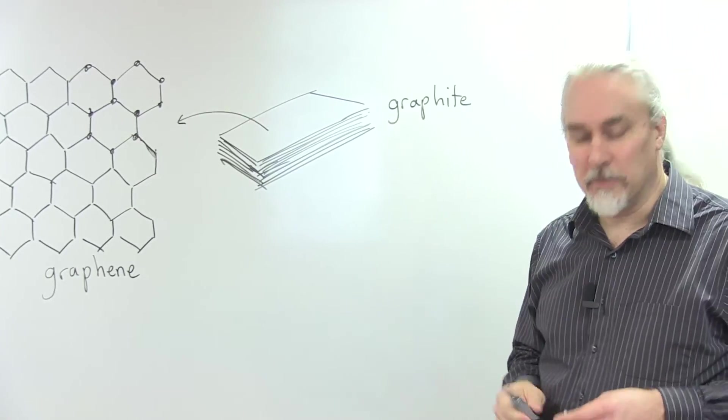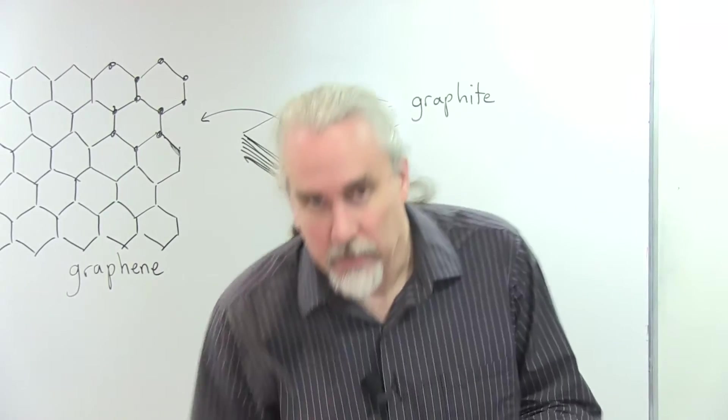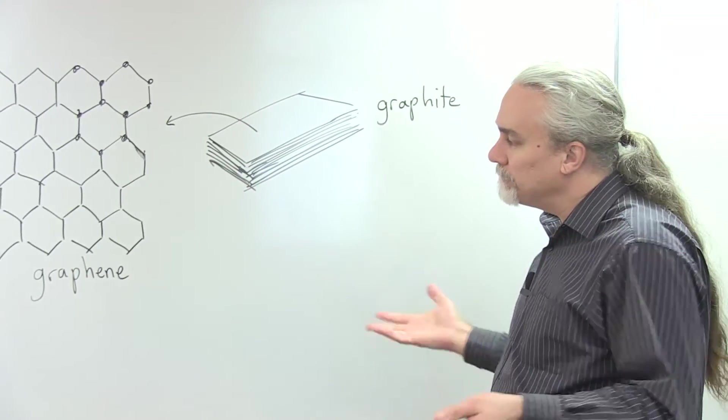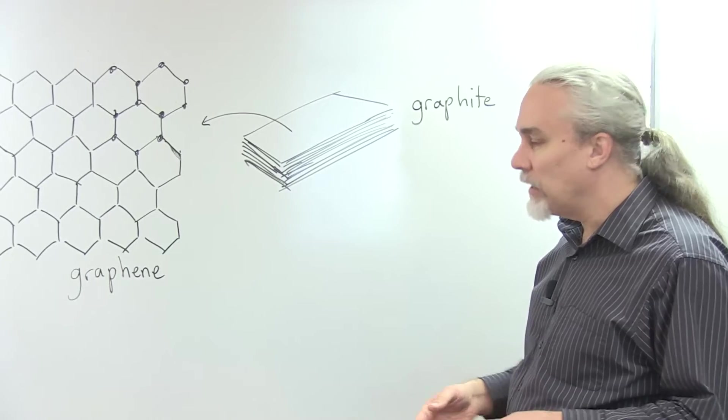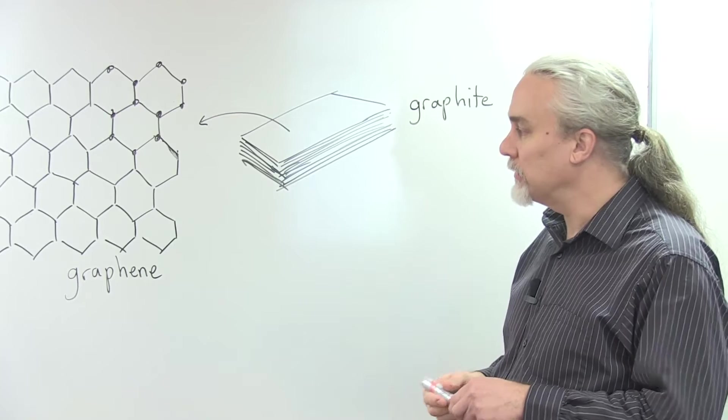So why is graphene interesting? Graphene has an interesting property, and unlike most materials, graphene is a conductor of electricity, but it conducts electricity only in certain directions.